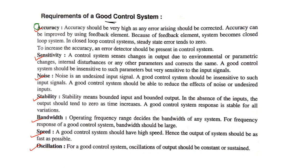The oscillation of the output will be discussed in the next video. For a good control system, oscillations should be less — if oscillations are less, then the stability of the control system is very good. The most important requirement is accuracy, which should be very high and is achieved by using an error detector present in a closed loop control system. Thank you very much.